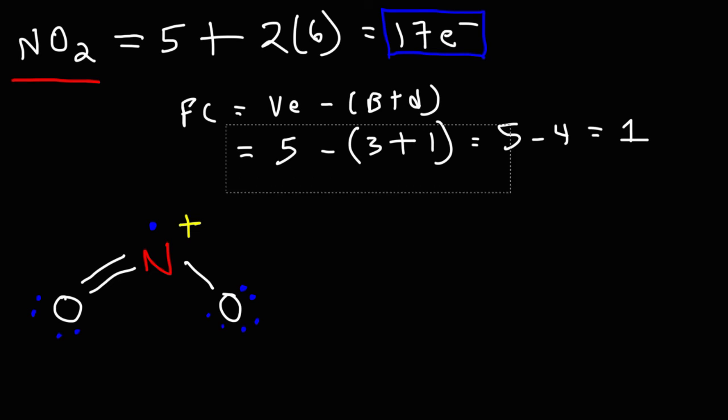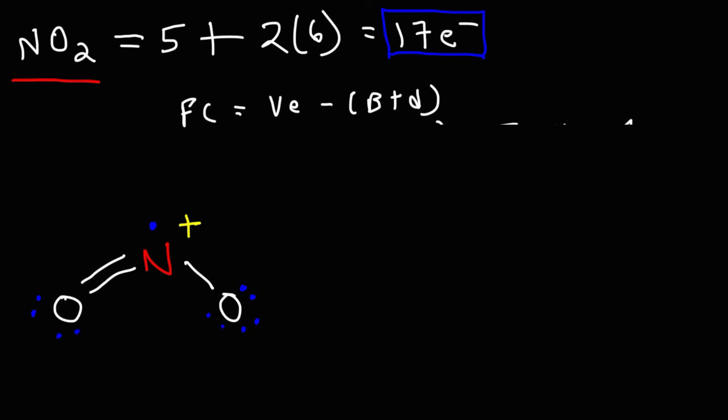Now, let's do the same thing for oxygen. Let's focus on this oxygen. Oxygen has six valence electrons, two bonds, four dots. Six minus six is zero. So the oxygen on the left is neutral in charge.